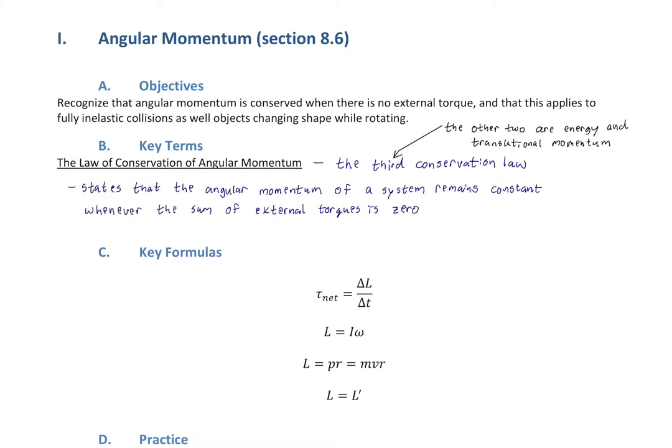We need to define what angular momentum is. The law of conservation of angular momentum states that the angular momentum of a system remains constant whenever the sum of external torques is zero. That sounds a lot like conservation of translational momentum, which states the momentum remains constant whenever the sum of external forces is zero. All we've done is replace 'momentum' with 'angular momentum' and 'forces' with 'torques'.